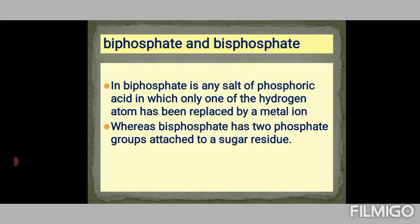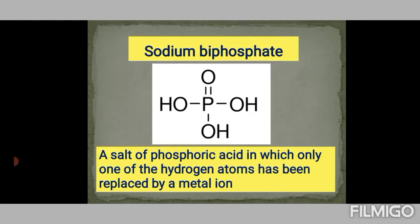Now we can see the difference between biphosphate and bisphosphate. A biphosphate is any salt of phosphoric acid in which only one hydrogen atom has been replaced by a metal ion — meaning it has a single phosphate group only. For example, sodium biphosphate, where the hydrogen atom of phosphoric acid is replaced by sodium.